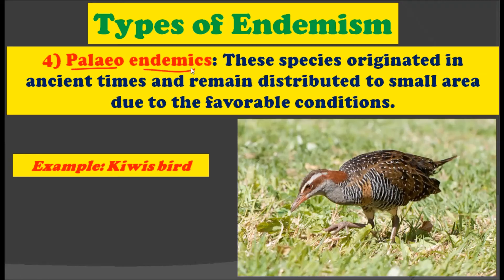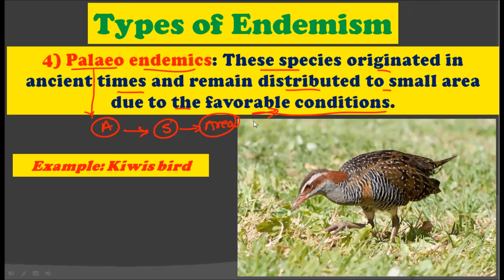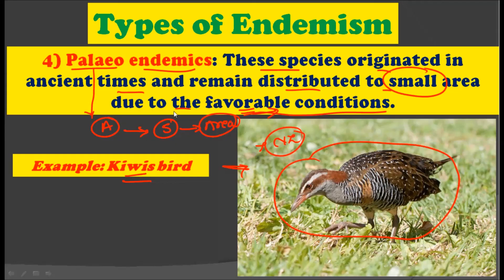The fourth type of endemics is paleoendemics. These species originated in ancient times and remain distributed to a small area due to favorable conditions. Many plants and animals require very specific conditions for growth. In paleoendemics, unlike ancient endemics, these species did not distribute throughout the world — they remained in a very small area due to favorable environmental conditions from ancient times. The example for paleoendemics is the kiwi bird, which originated in ancient times but remains restricted to New Zealand only.